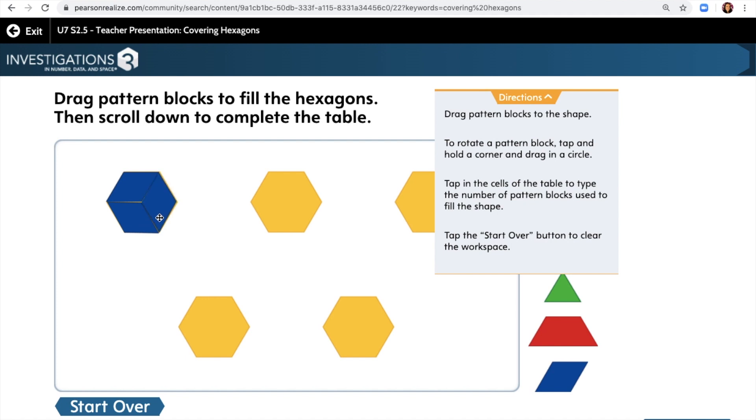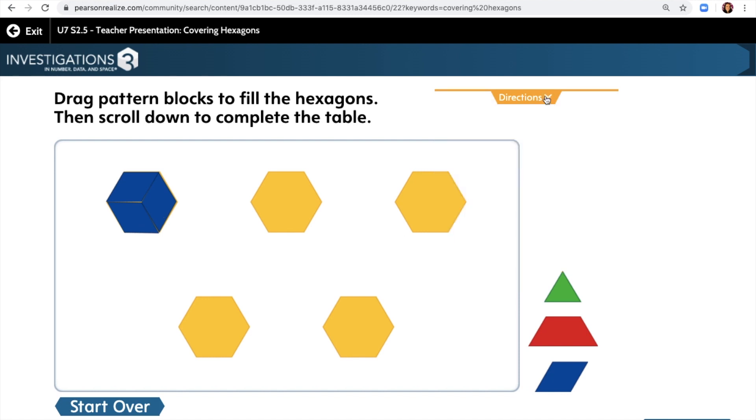So three rhombuses cover one hexagon. If we had two hexagons, how many rhombuses would we need? And if you said six, you are correct. We would have six rhombuses to cover two hexagons, and our equation would be three plus three. So let's do another one.